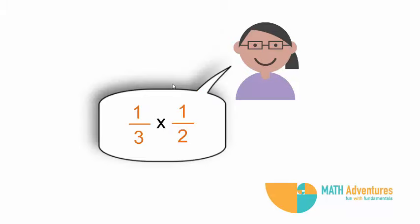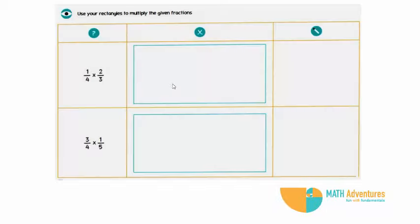This also extends to cases like 1 by 3 into 1 by 2. Today, you are provided with a lab observation sheet which has a number of problems.